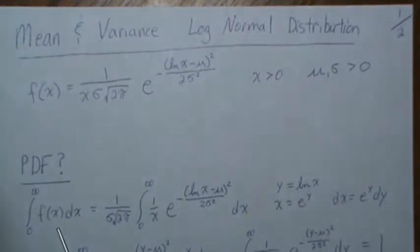So first let's prove that it is a PDF which means integrated over its domain it should equal one. So we plug in our PDF here, we bring out the values that are constants in regards to X.